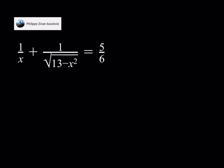In this video, we'll be solving a radical equation. If you liked the video, please comment, like and subscribe and hit the bell button for notifications. And let's get started. So we do have this radical equation: 1 over x plus 1 over square root of 13 minus x squared equals 5 over 6, and we're going to be solving for values of x.